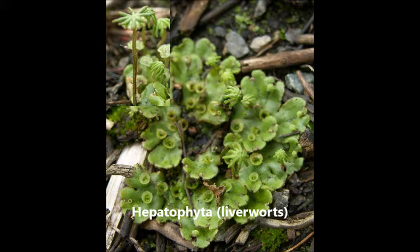This is the Hepatophyta, or the liverworts. The leaf-like structures are called thallus, and on them are the circular gemmae cups where asexual reproduction happens. In sexual reproduction, the sperm from the antheridial structures swim to the archegonial structures — the archegonial structure is the palm tree-looking thing. The rhizoids are root-like structures underneath the whole thing.